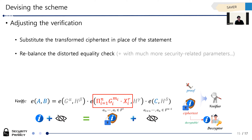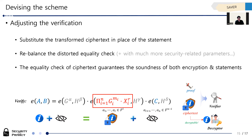Of course it is not as simple as it looks — it involves decisions on where to encode the additional values, and there are many more security-related parameters which are omitted here. But at the end of the day, this rebalanced equality check on the ciphertext guarantees the soundness of both encryption and statements. The given ciphertext is an ElGamal ciphertext decryptable by the secret key holder. Even though the verifier cannot decrypt the message, they can input this ciphertext to the ZK-SNARK-like verification along with the proof, and then confirm that the message behind the ciphertext also satisfies the properties defined in the relation.